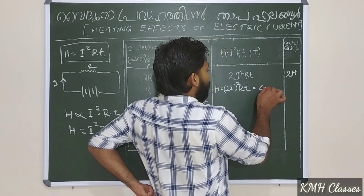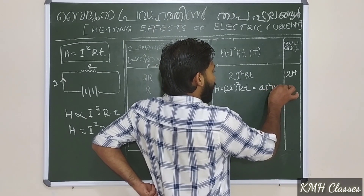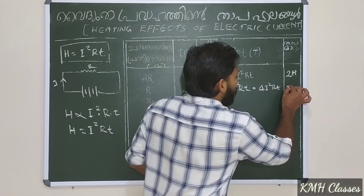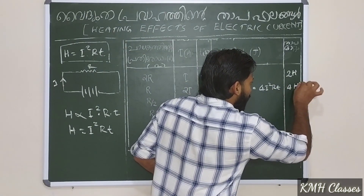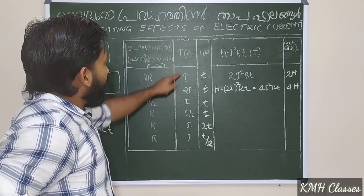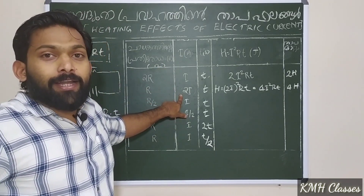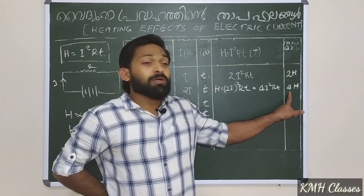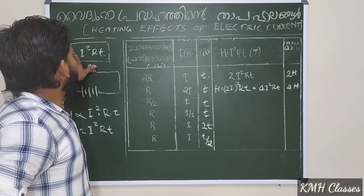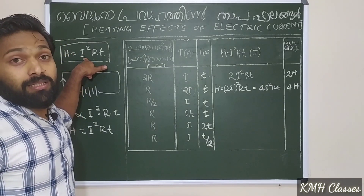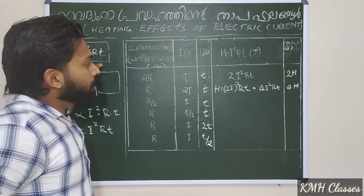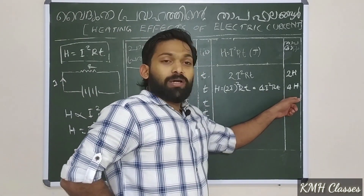2I all square gives 4I squared R T. Remember I squared R T: I take the total and now I have 4 — that is 4H. And now we have 2I giving 4I squared. I said that when we use Joule's Law, the current doubled gives 4I squared.